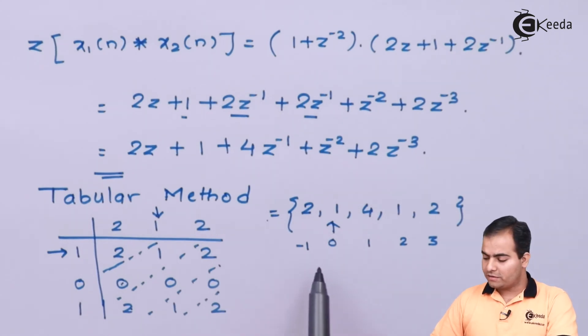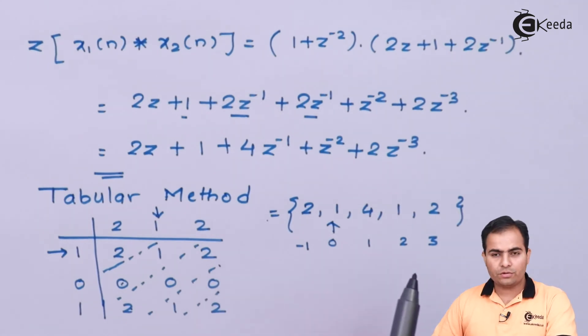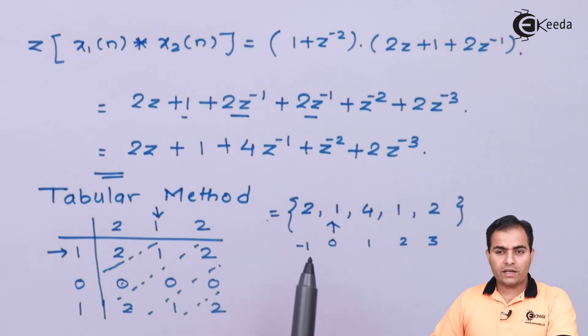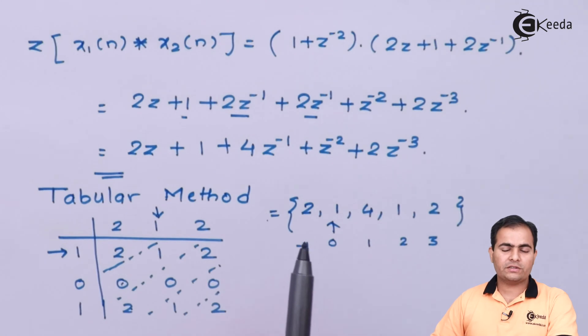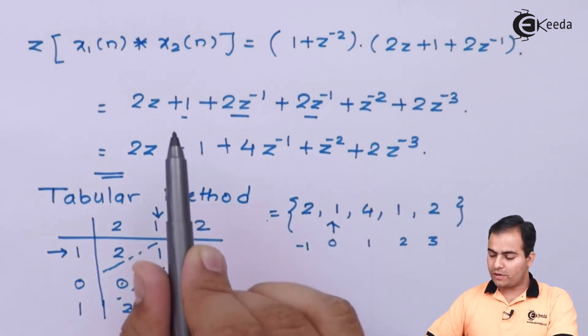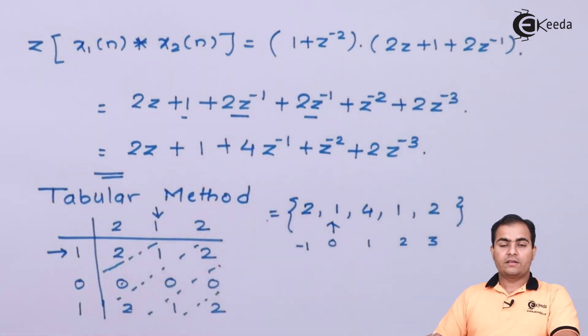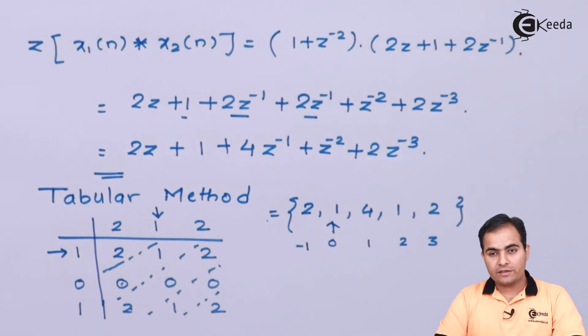This is another technique to find the convolution. For a 5-mark question you can use the tabular method, but most of the time this question is asked for 10 marks, so perform the Z transform graphical approach. Thank you for watching this video. Stay tuned with Ikeda and subscribe. Thank you so much.